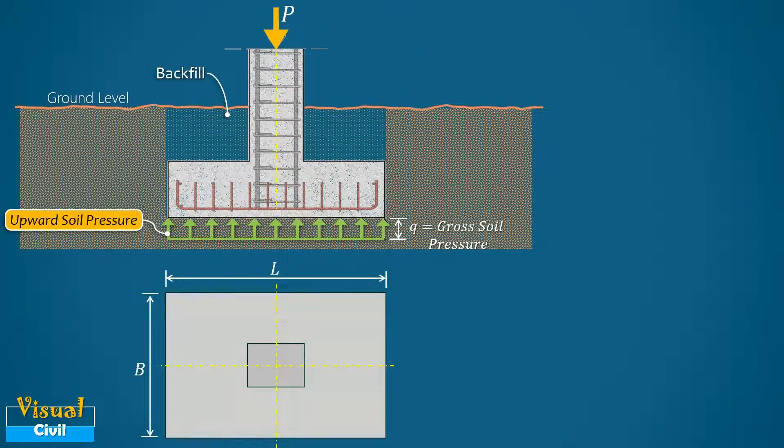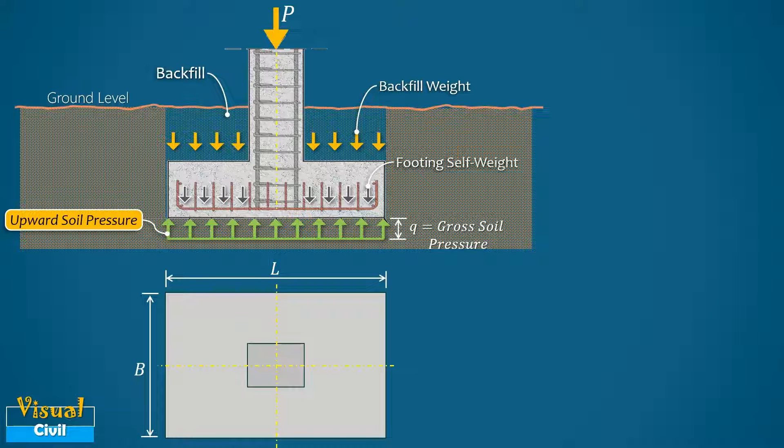In addition to the load transferred by the column on the footing, the weight of the backfill and self-weight of the footing are also transferred on the founding soil. For preliminary calculations, the weight of the footing plus backfill, that is delta P, may be assumed as 10 to 15 percent of P.